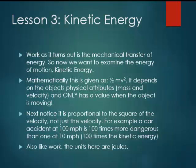Also notice it's proportional to the square of the velocity, not just the velocity. So for example, a car accident at 100 miles per hour is 100 times more dangerous than one at 10 miles per hour because it has 100 times the kinetic energy. This is why it takes more energy to make objects go faster and faster. Also, like work, the units here are joules.